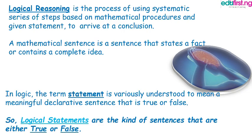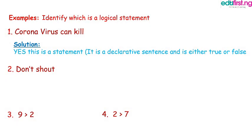Let's look at an example. Example 1: Coronavirus can kill. Can coronavirus kill? Oh yes, coronavirus can kill, because it has been proven. So it is a declarative sentence. The fact that you can say yes, coronavirus can kill — or some other person can say no, it is false, it can't kill — means such a statement is logical. Coronavirus can kill. It is a logical statement because it is true.